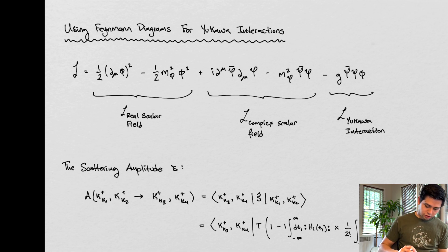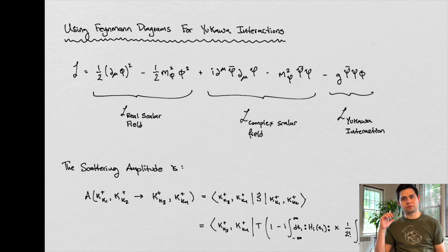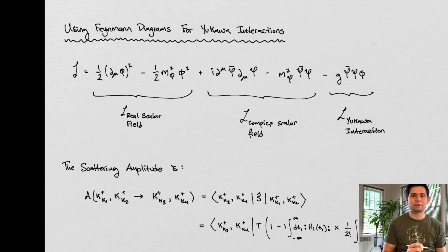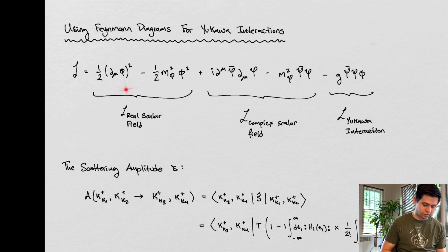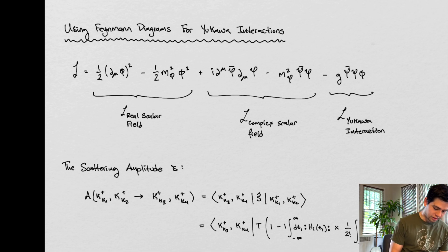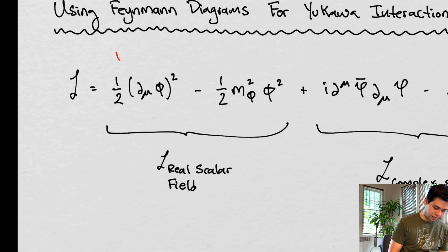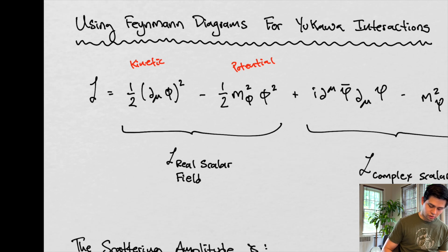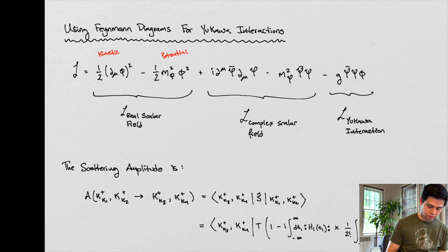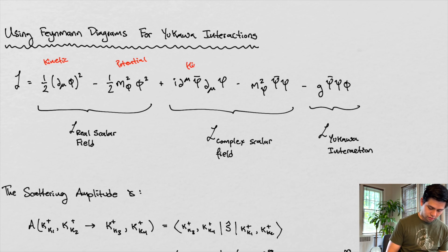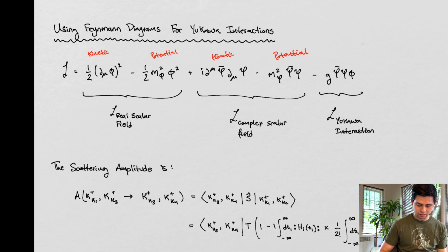So this is our Lagrangian. We are going over this Lagrangian. This is the real scalar field — we've seen this before — where we have the kinetic term and a potential term for our real scalar field. And then we have our complex scalar field, with its kinetic part and its potential part.